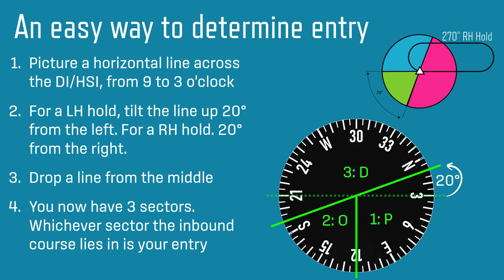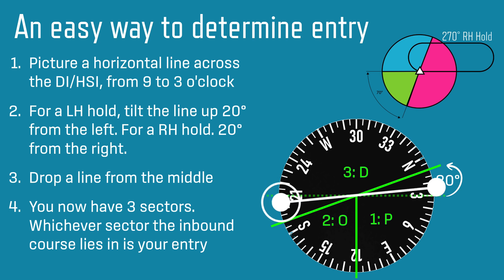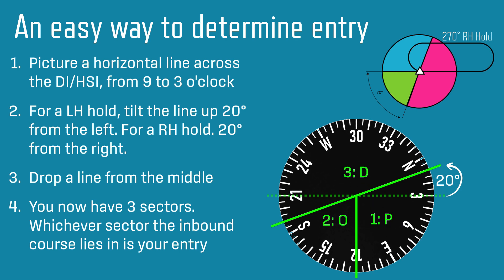Here is a good way to visualize hold entries in the air. When tracking towards the fix — and only then — picture a horizontal line across the DI or HSI from 9 o'clock to 3 o'clock. If it is a left-hand hold, push the left-hand side up 20 degrees. If it is a right-hand hold, push the right-hand side up 20 degrees. Then drop a line down from the center. This recreates the geometry of the sectors on your heading indicator. The biggest sector is direct, the second biggest is parallel, and the smallest is offset.